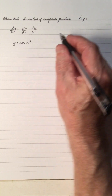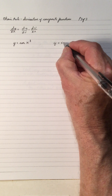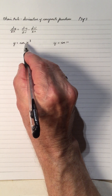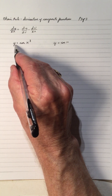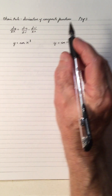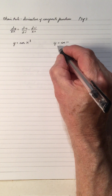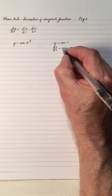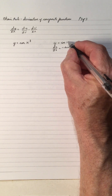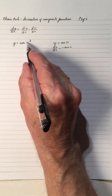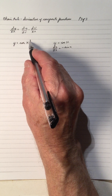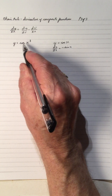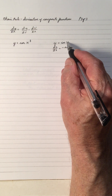Now let's look at a new example. Before this, we could not do the derivative of y equals cos(x cubed). We looked at y equals cos(x), where dy/dx is negative sine x, because there's just an x. But now we have x cubed — the x is being cubed, not the cos. So this is a composite function where x cubed goes into the place of x.